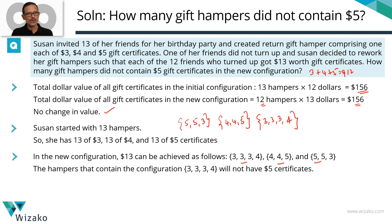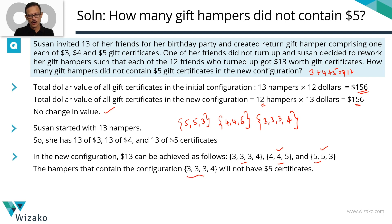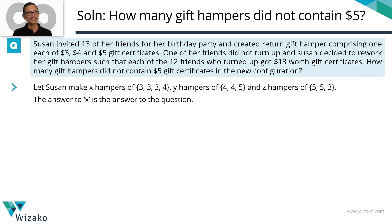Now, what do we have to find out? We need to find out how many of those gift hampers did not contain a $5 certificate. The $5,$5,$3 configuration has $5 — yes. The $4,$4,$5 configuration has $5 — yes. The $3,$3,$4 configuration — no. So we need to count how many hampers of that last configuration Susan made. Let's assign variables: x of the first type, y of the second, z of the third. The value of x gives us the answer.